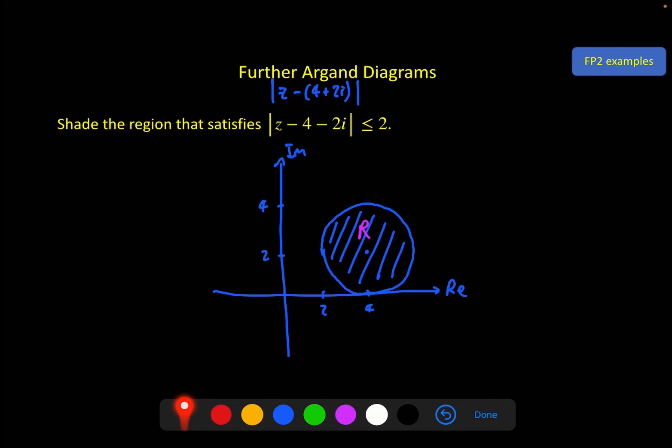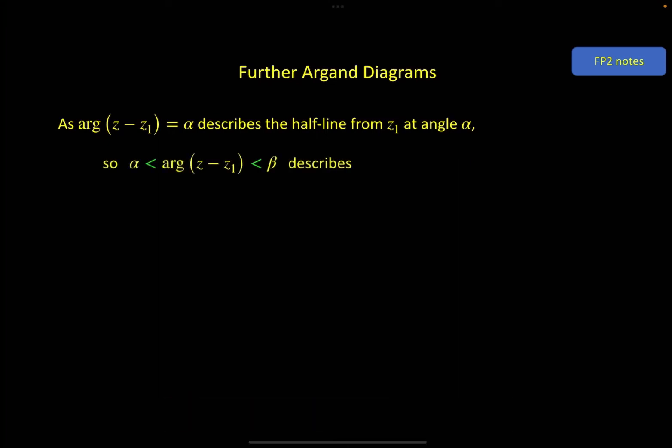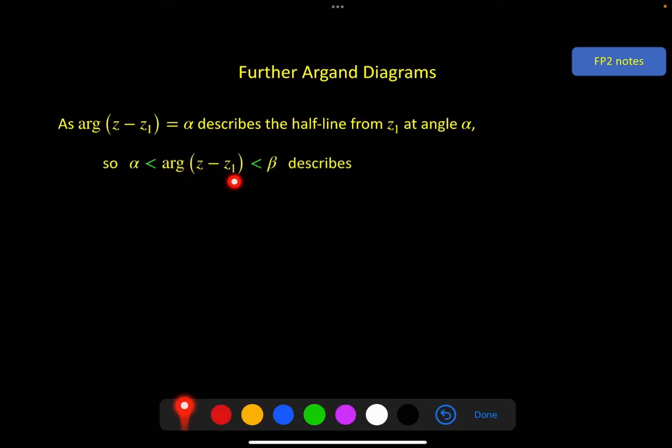The next one is similar, but it is slightly different. We're looking at the argument of z minus z1 is equal to alpha, and that's the half line from z1 at an angle of alpha to the real axis. What, then, would this describe? Pause the video now if you want to puzzle this out for yourself. This is saying that the argument, the angle of this half line, is greater than alpha, but less than beta. That's giving us two half lines.